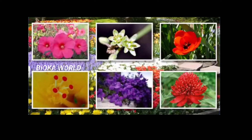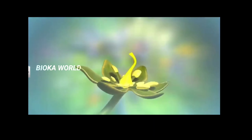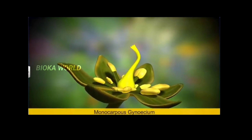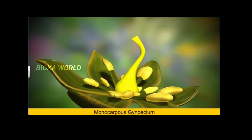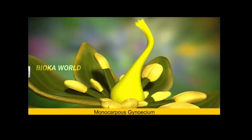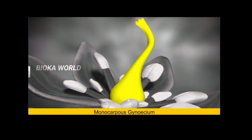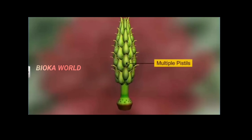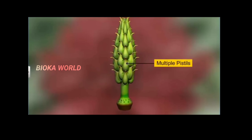You can see many variations in the Gynoecium of different flowers. For example, the Gynoecium can be monocarpous, consisting of a single pistil or carpel, or it may be multicarpous, in which case we see several pistils in a single flower.